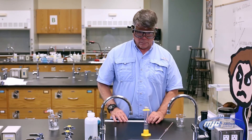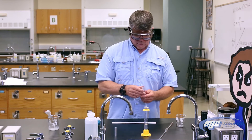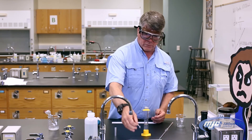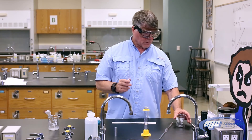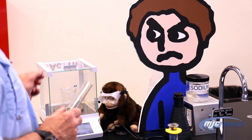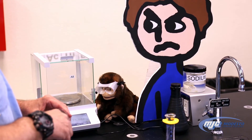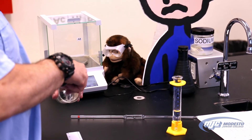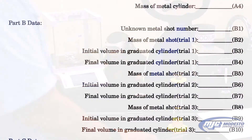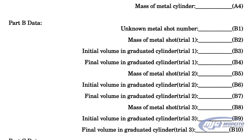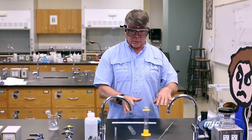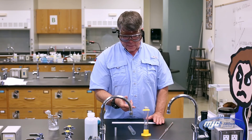For Part B, the metal shot: if you're doing this in the lab, there will be an unknown number — take it off and tape it in your data table. To get the mass of the metal shot, take an empty beaker, place it on the balance, and tare it to zero. Then carefully pour the metal shot into the beaker — some metal shot is quite dense so don't just dump it in, or it'll break the beaker. Place the beaker back on the balance and record the mass to three places past the decimal in grams. That's your B2 for trial one. You'll repeat this for trials two and three, recorded as B5 and B8.